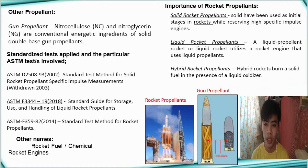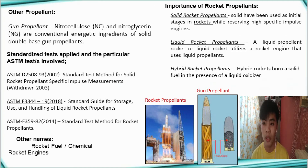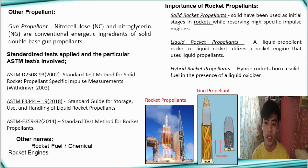On the other hand, the main difference between the two types of engine is that the rocket carries its own supply of oxygen for combustion. Jet engines require oxygen from the atmosphere for combustion and so cannot operate in the vacuum of space.